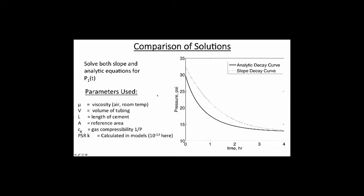This is a comparison of the two solutions, both solved for P1(t) using the same parameters: viscosity of air at room temperature (since air pressurized the sixteenth-inch tubes), known tubing volume, cement length to the pressure transducer, reference area, gas compressibility, and a permeability of 10⁻¹³. These are the resulting decay slopes over four hours.